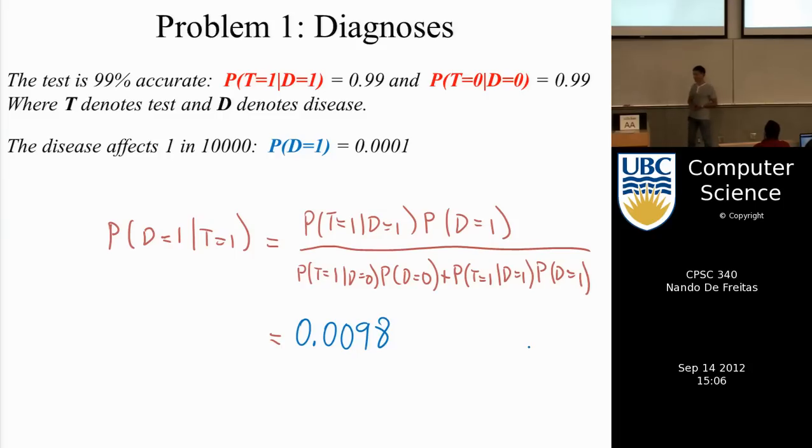In fact, Josh Tenenbaum—and I'm going to write his name here because he is definitely worth googling—he's one of my colleagues who works at MIT and he does a lot of work in machine learning, but he's a psychologist too.